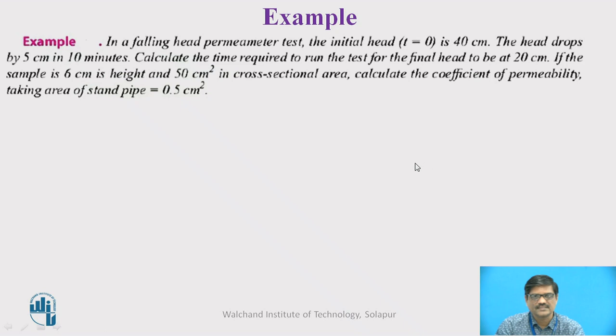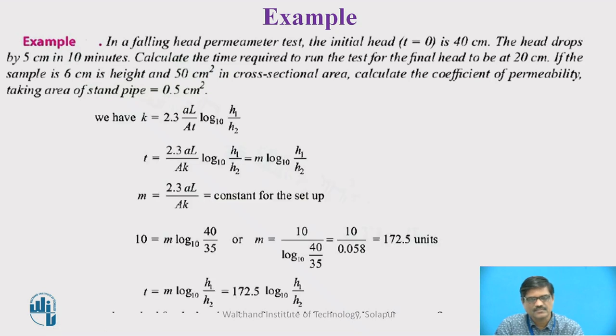To understand the process, let us go through this example. In a falling head permeability test, the initial head is 40 centimeter at T equal to 0 and the head drops by 5 centimeter in 10 minutes. Calculate the time required to run the test for the final head to be at 20 centimeter. If the sample is 6 centimeter in height and 50 centimeter square in cross section area, calculate the coefficient of permeability taking area of standpipe 0.5 centimeter square. This can be solved by the equation we derived. We know K equals 2.3 AL upon AT log to the base 10 H1 upon H2. We will substitute all the values. We can find this constant term from the equation 2.3 AL upon AK.